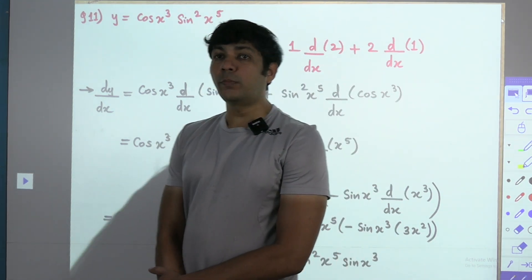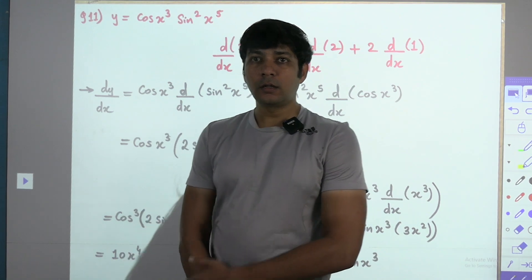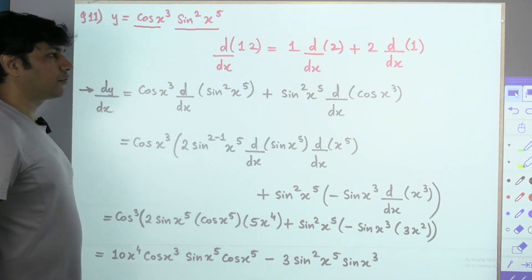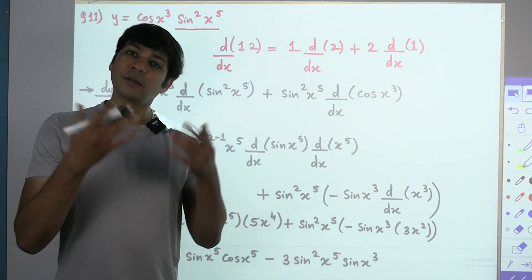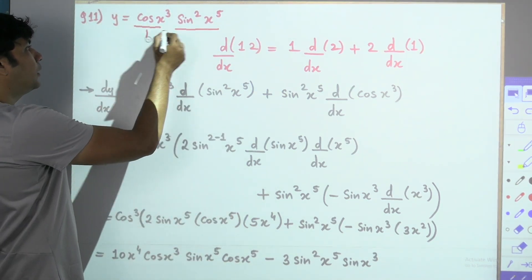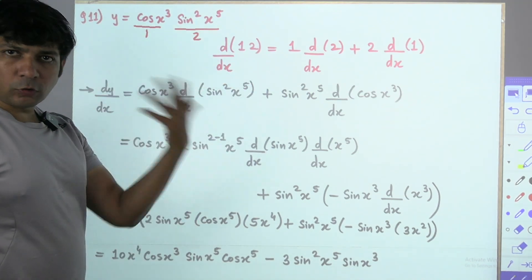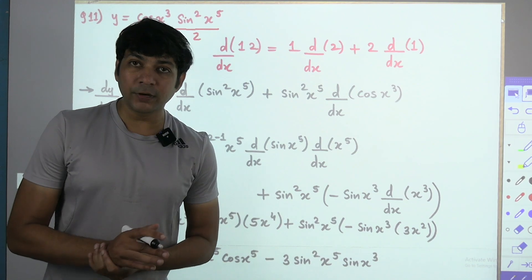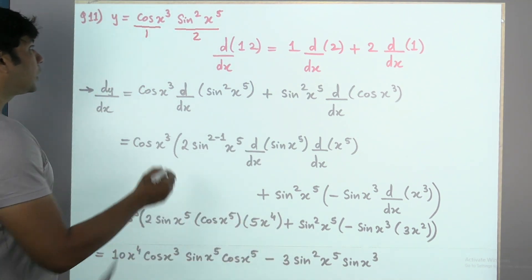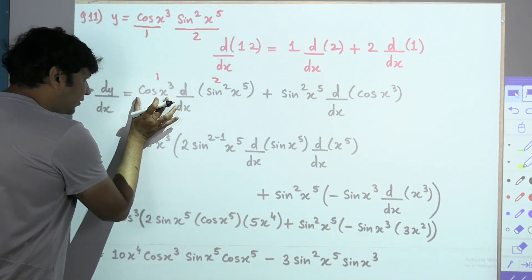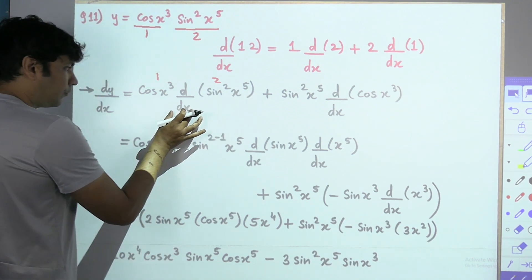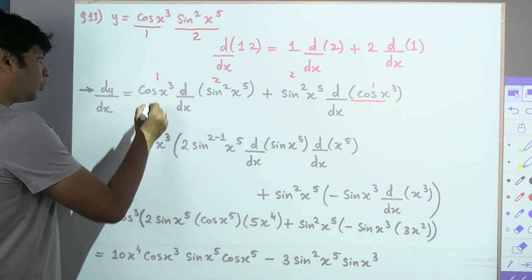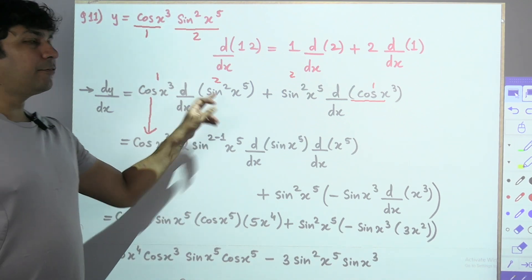Eleventh problem: y = cos(x³) · sin²(x⁵). There are multiple trigonometric functions separated by a multiplication symbol, which activates the product rule. cos(x³) holds position 1 and sin²(x⁵) holds position 2. Product rule: keeping first constant, differentiate second, plus keeping second constant, differentiate first. So: cos(x³) · d/dx[sin²(x⁵)] + sin²(x⁵) · d/dx[cos(x³)].